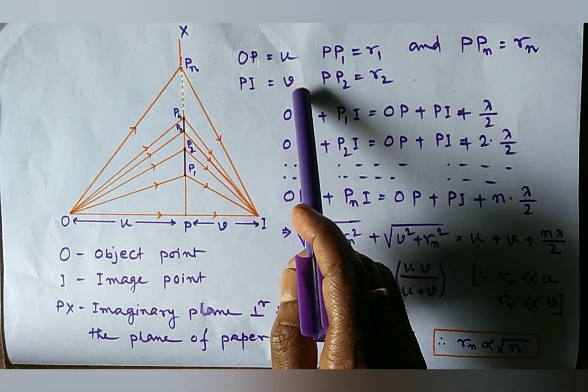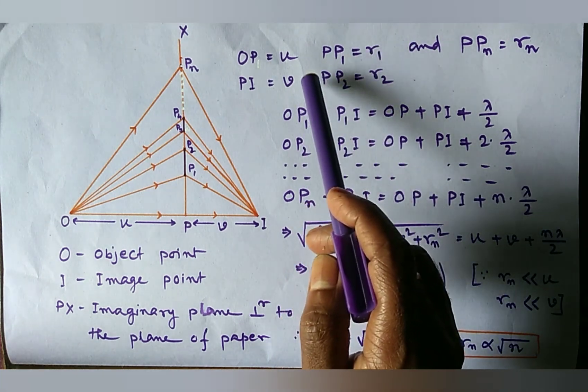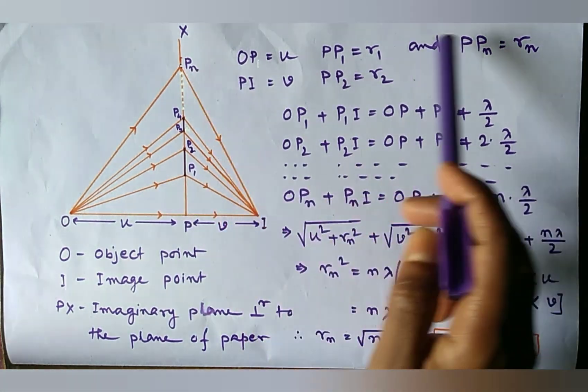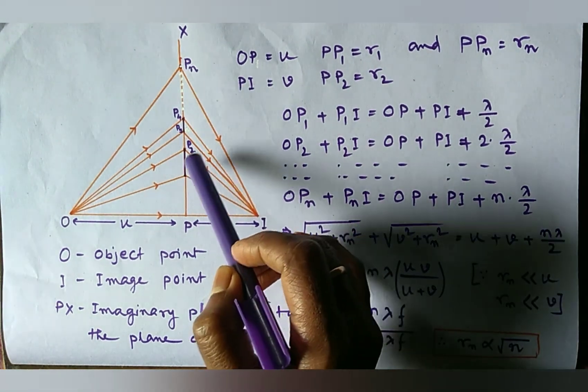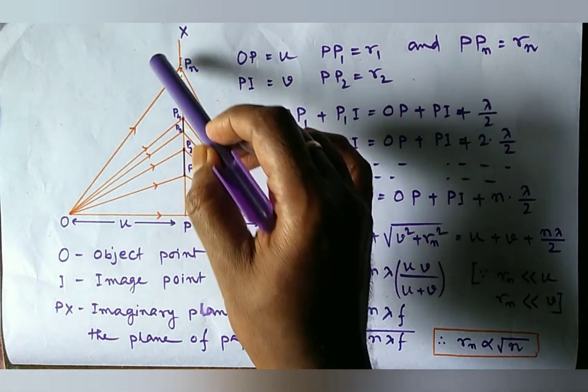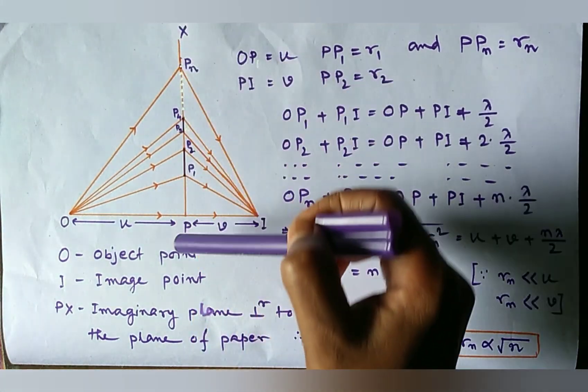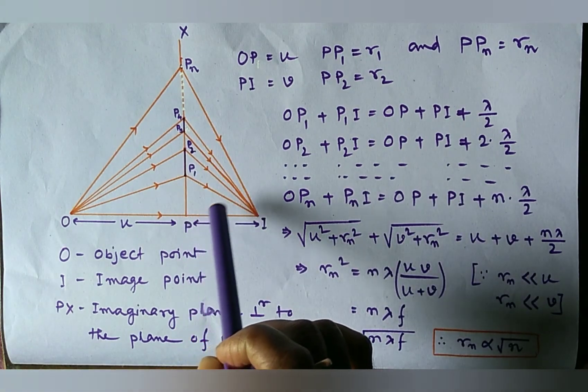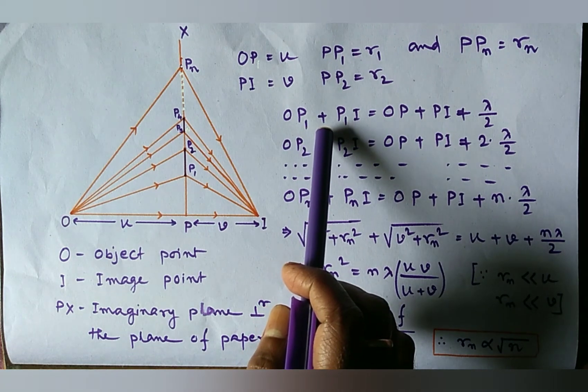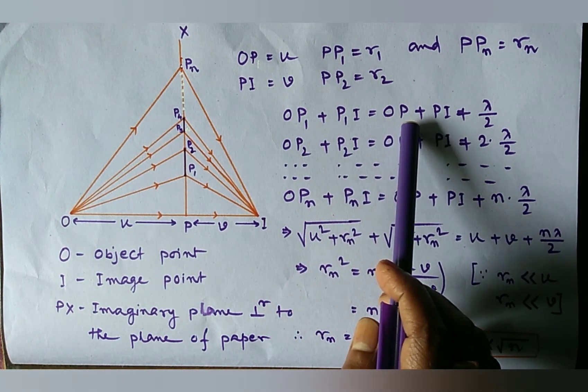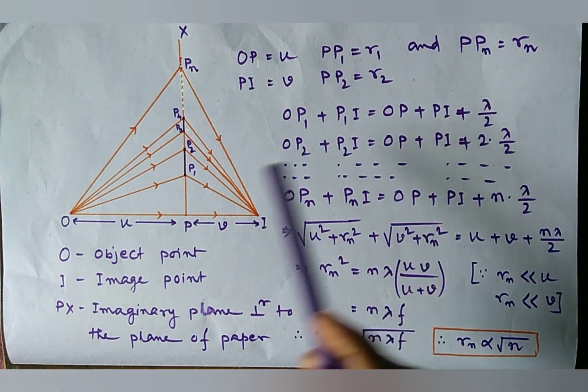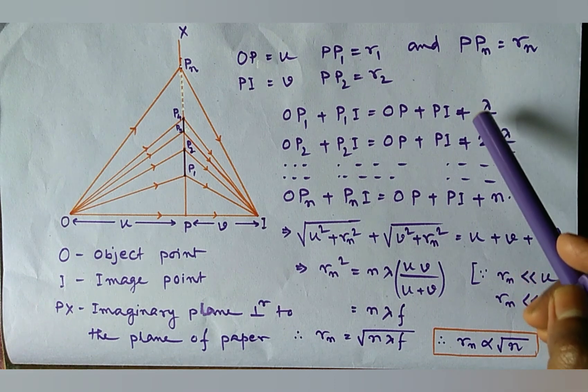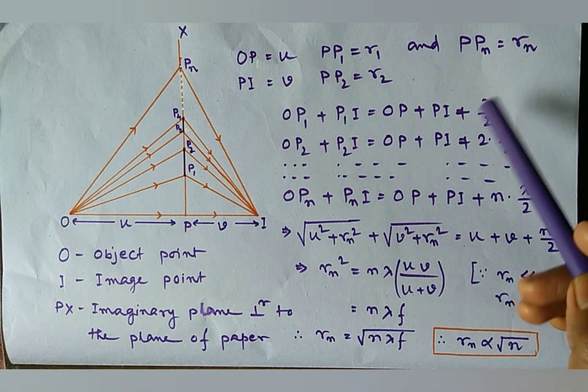We also take PP1 equal to R1, PP2 equal to R2 and PPn equal to Rn. Now P1, P2, P3 and Pn are the points on the imaginary plane Px and these points are so chosen that we may write OP plus P1I equal to OP plus PI plus lambda by 2.